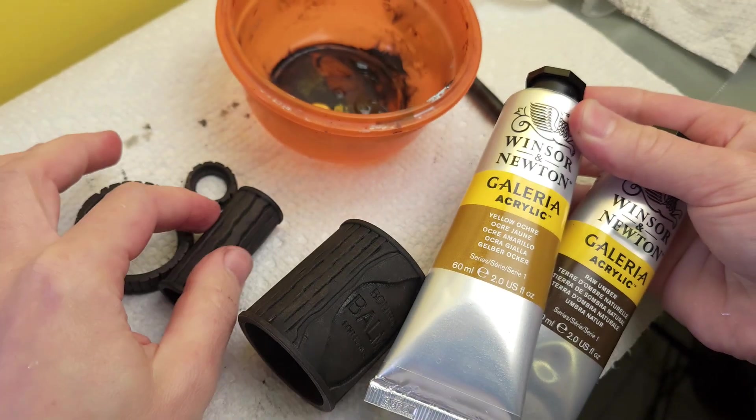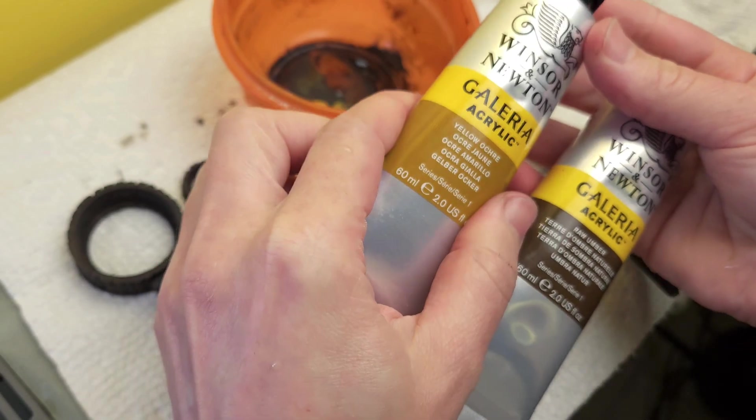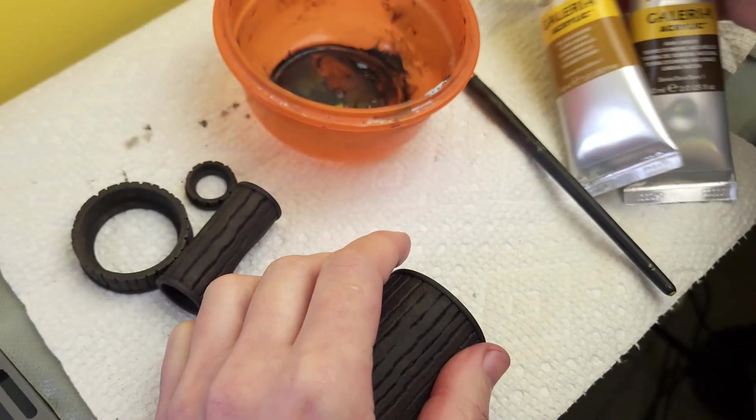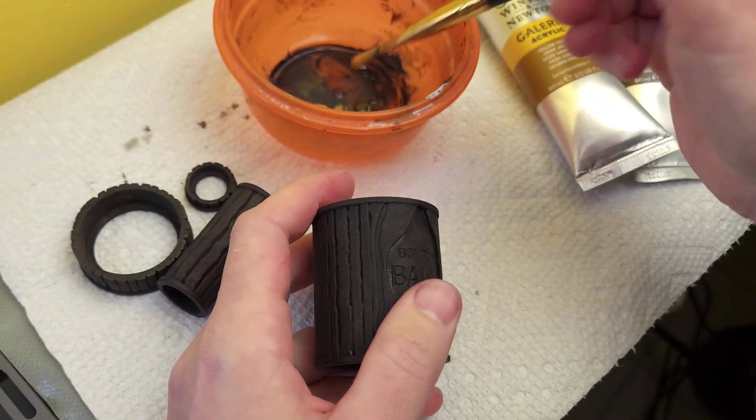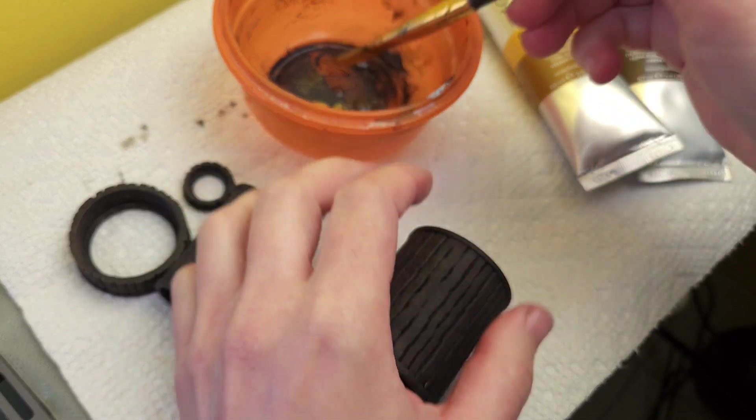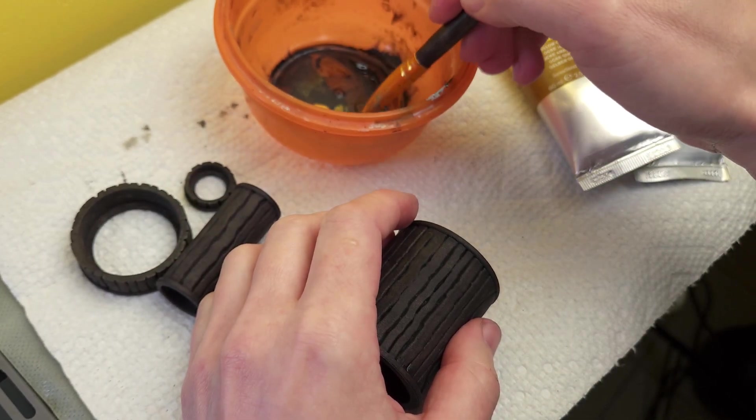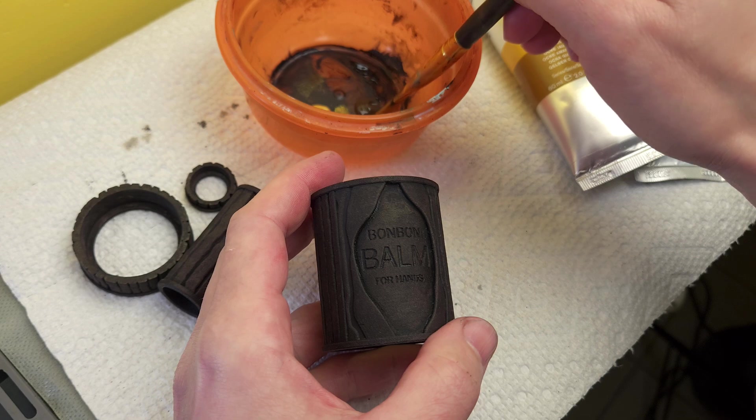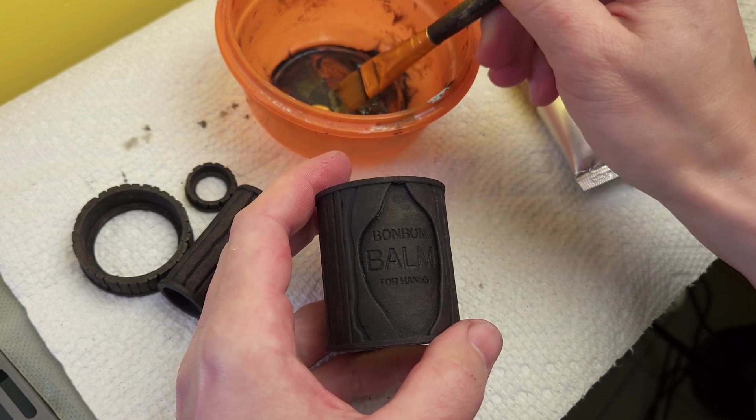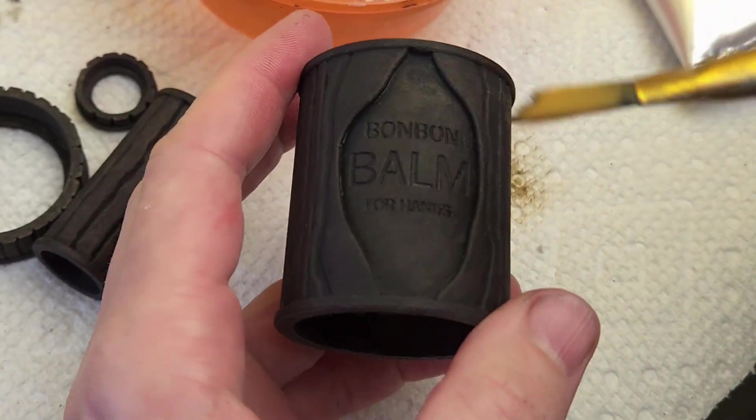The base coat's dry on all the parts, so I'm going to add in some dry brushing now. Adding in this lighter yellow color along with the umber. This is very dry, no water. And the goal is to get it to stay on top. I don't want to get this down into the text. I want to keep that dark and just bring on some highlights here.